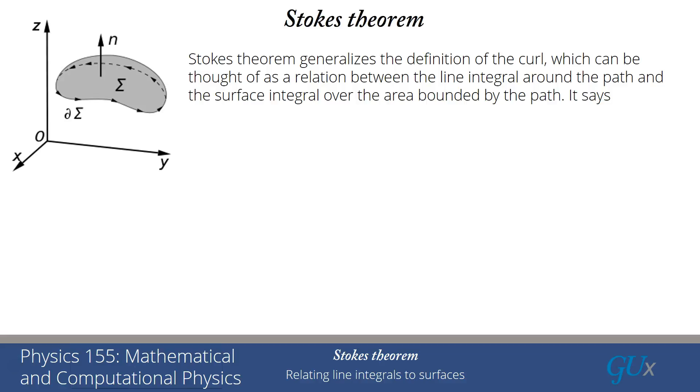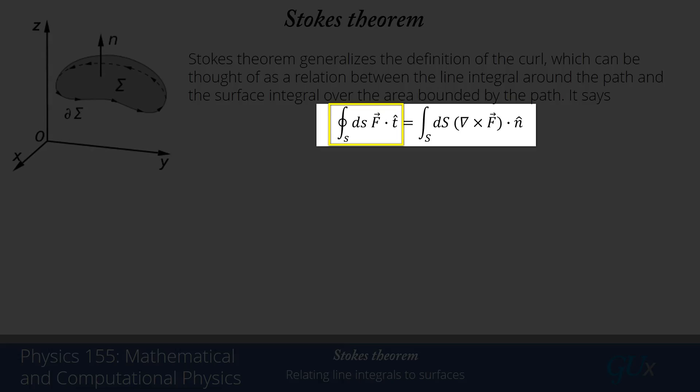It says the line integral over that closed boundary path, where I'm taking the vector field dotted into the unit tangent vector, is equal to the integral over the capping surface of the curl of f dotted into the normal vector that relates the surface area of a small patch as we sum up all the patches to create the total surface area.